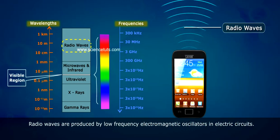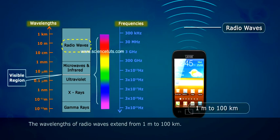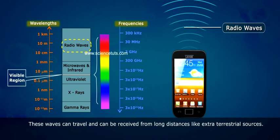Radio waves are produced by low-frequency electromagnetic oscillators in electric circuits. The wavelengths of radio waves extend from 1 metre to 100 kilometres. These waves can travel and can be received from long distances like extraterrestrial sources.